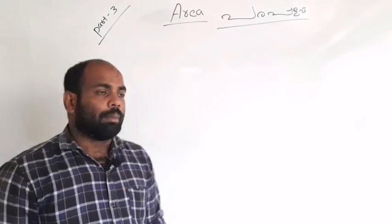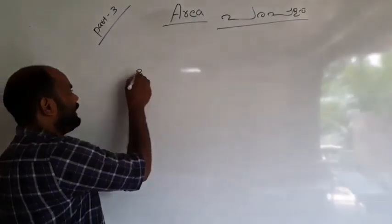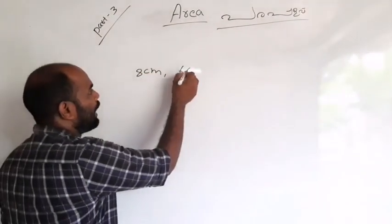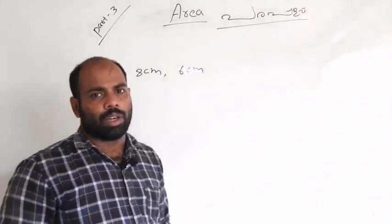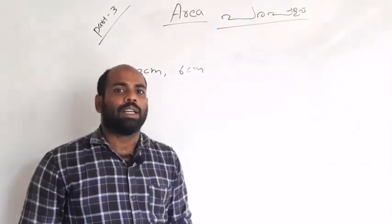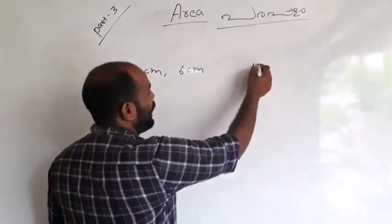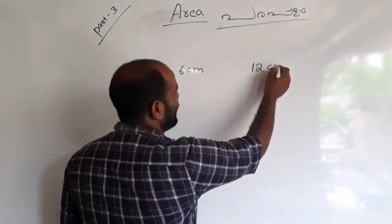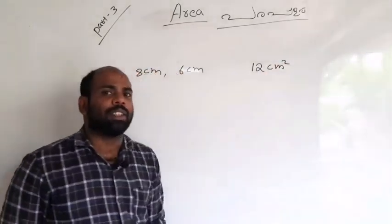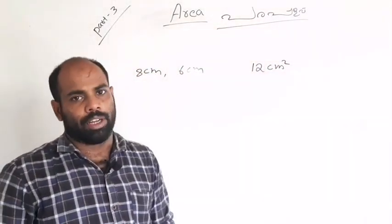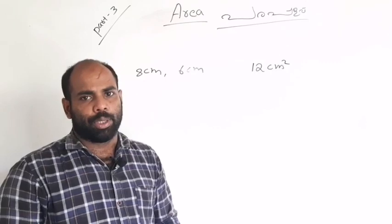We can see that. Let's take an example: 2cm, 2cm, 1cm, 1cm, 1cm. It's about 18 cm². So it's easy to do it.